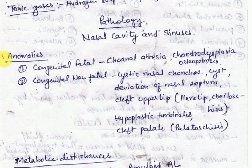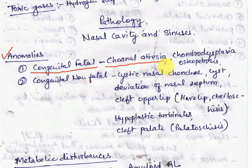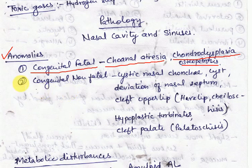Congenital anomalies of the nasal cavity are rare in domestic animals. Anomalies such as choanal atresia, imperforate buccopharyngeal membrane, certain types of chondrodysplasia, and osteopetrosis are incompatible with life.